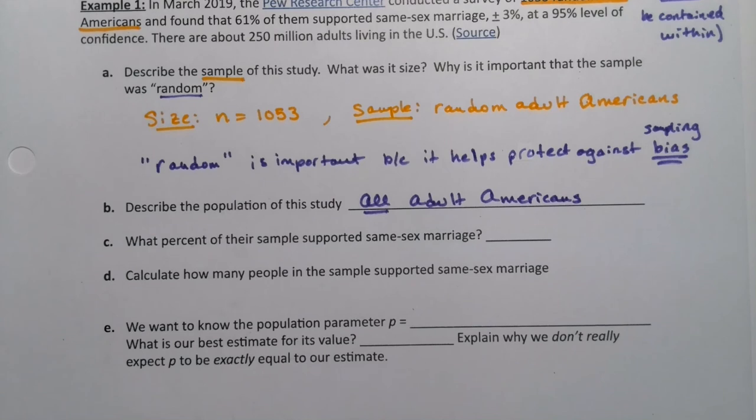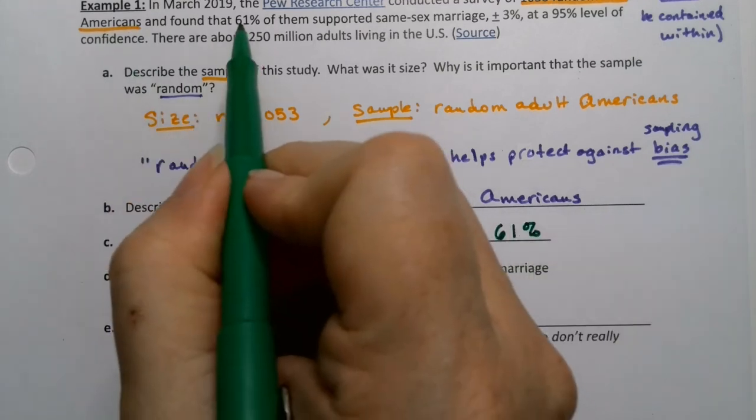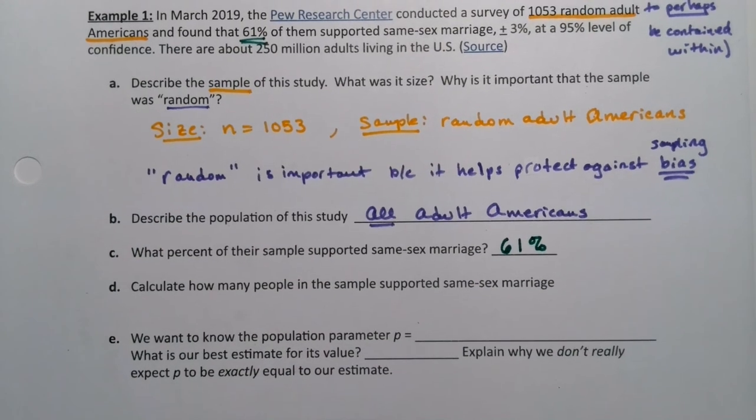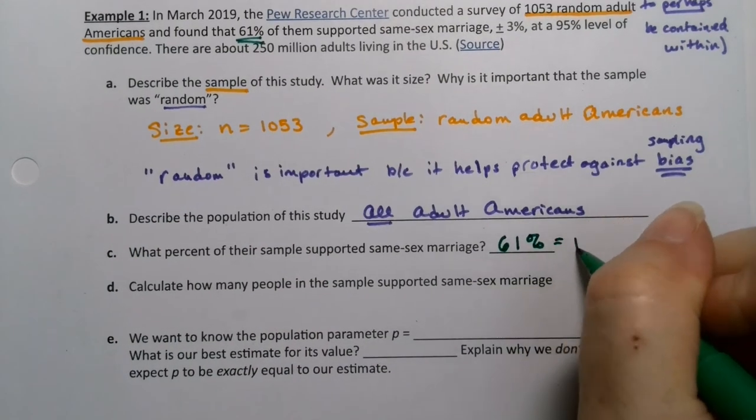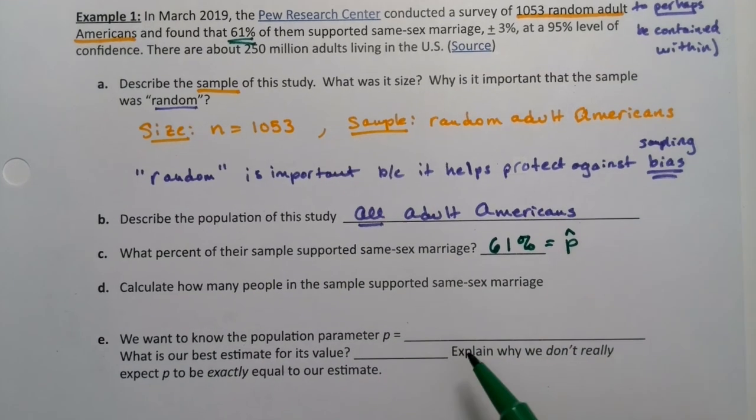What percentage of the sample supported same-sex marriage? It must have been 61%, right here. That must be the percentage from your sample. So that would actually be a P hat. It's from your sample, the percentage that supported same-sex marriage.